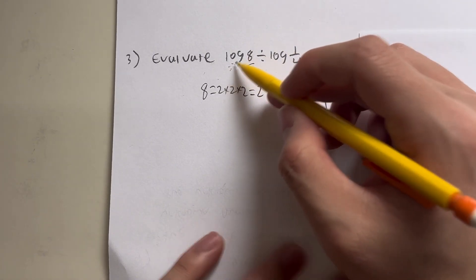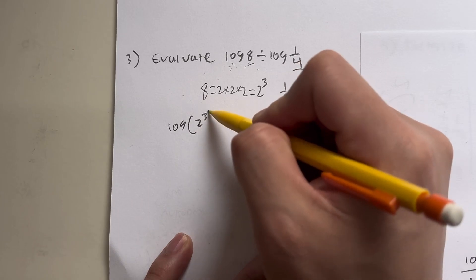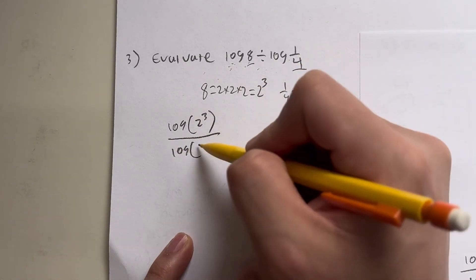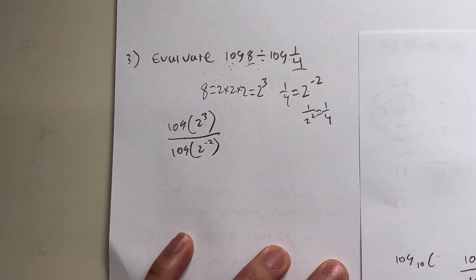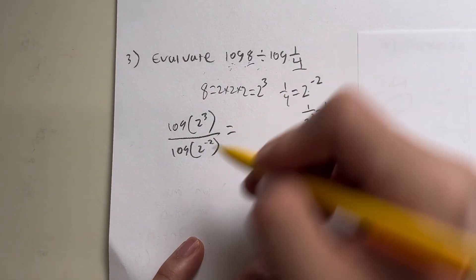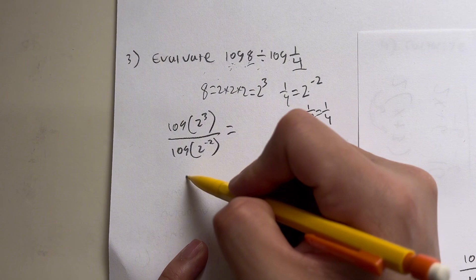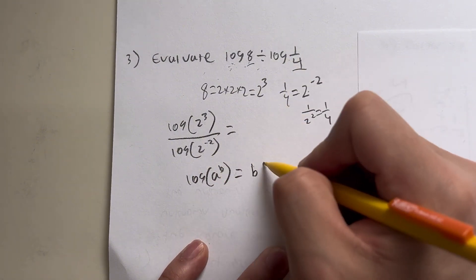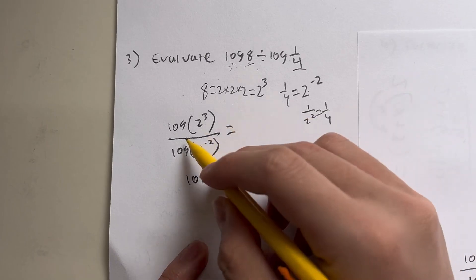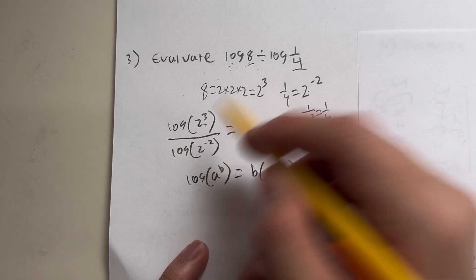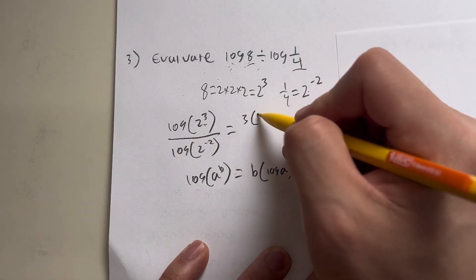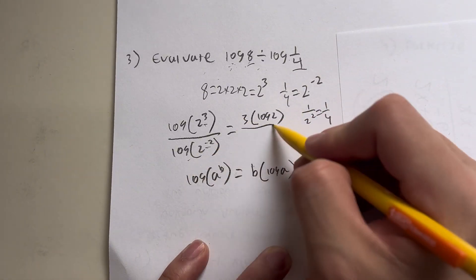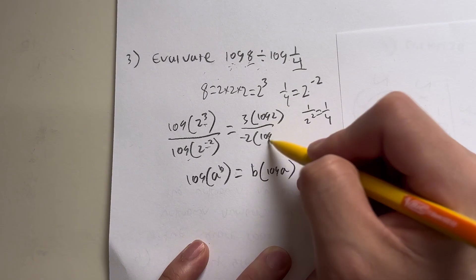Now, I'm going to rewrite log of 8 as log of 2 to the third power, and then divided by log of 2 to the negative second, log of 1 fourth. And we have to simplify this, because we have to remember this exponential rule, where log of a to the b power is just the same as b times log of a. So this is actually just equal to our power 3 times log of 2. And this right here is equal to negative 2 times log of 2.